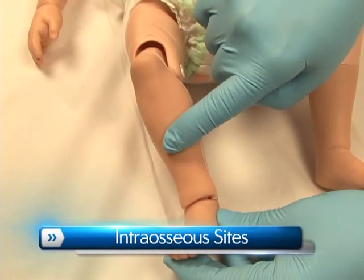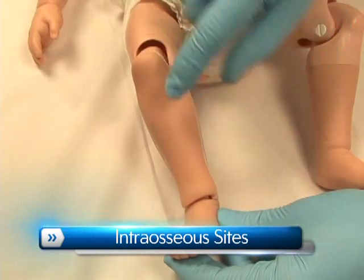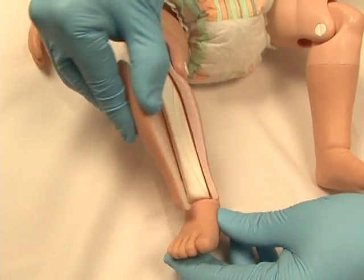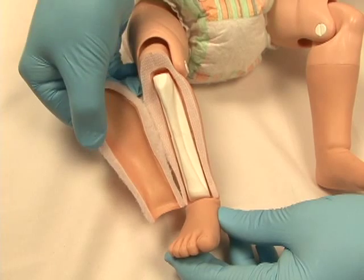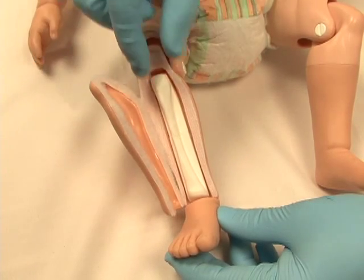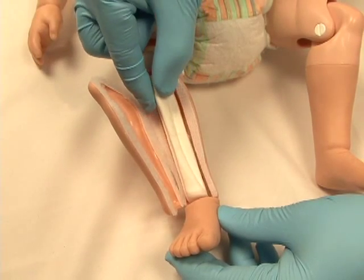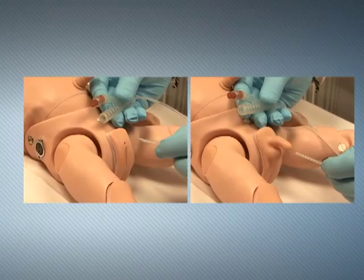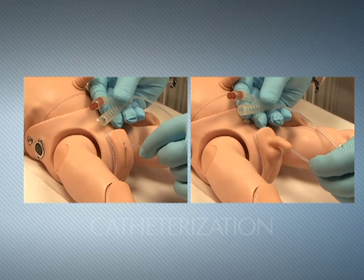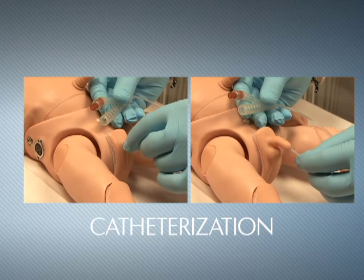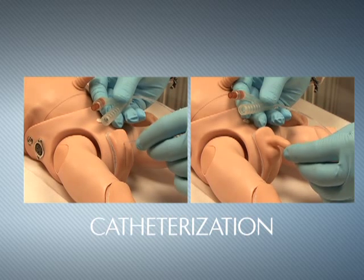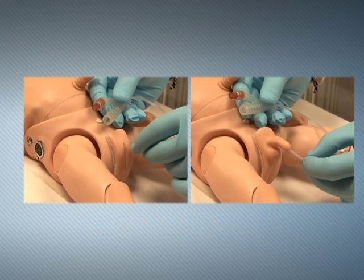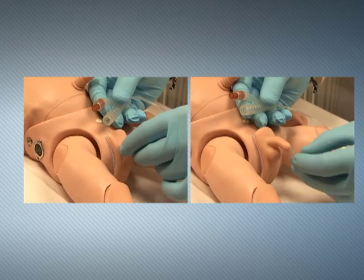The lower right leg has an intraosseous injection site with replaceable tibia bones. Newborn HAL can be catheterized via exchangeable male and female genitalia.